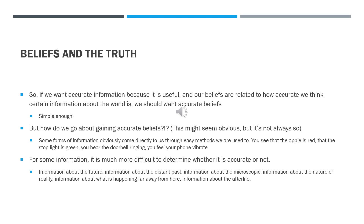Supposing that we want accurate information because it's useful, and our beliefs are related to the information we think is accurate about the world, then we should really want accurate beliefs. That seems pretty simple and straightforward, but how do we go about gaining accurate beliefs? This might seem obvious, but it's not actually that clear-cut. The way that we gain some beliefs is straightforward, but not the way that we gain all of them.